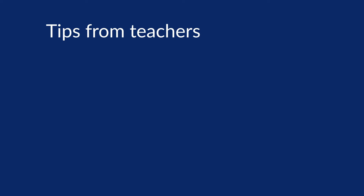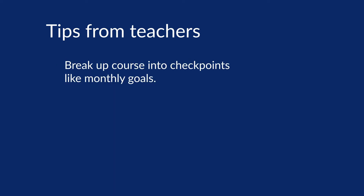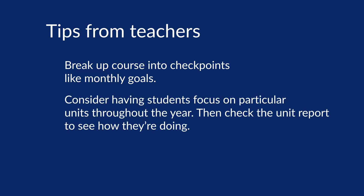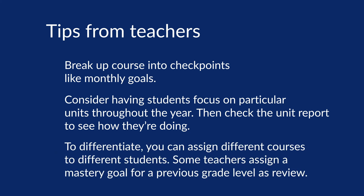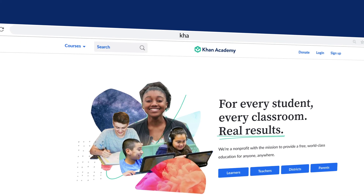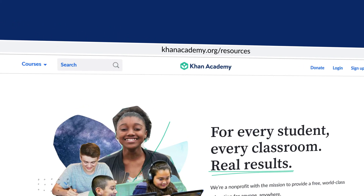Mastering an entire course can feel daunting to students, so break it up into checkpoints like monthly goals. You can also consider having students focus on particular units throughout the year, then check the unit report to see how they're doing. You don't need to assign the same course mastery goal to every student — to differentiate, you can assign different courses to different students. Some teachers assign a mastery goal for a previous grade level as review at the start of the year. For more information, go to khanacademy.org/resources.